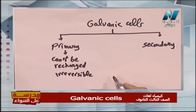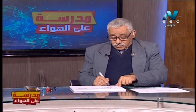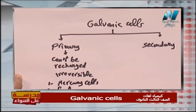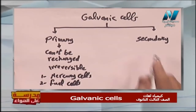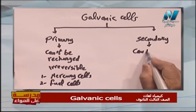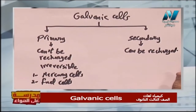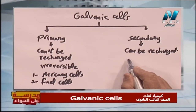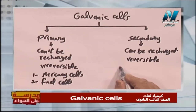Primary cells such as dry cell, mercury cell, and fuel cell cannot be recharged. Secondary cells, on the other hand, can be recharged once more — their reaction is reversible. Examples of secondary cells include the car battery and lithium-ion battery.